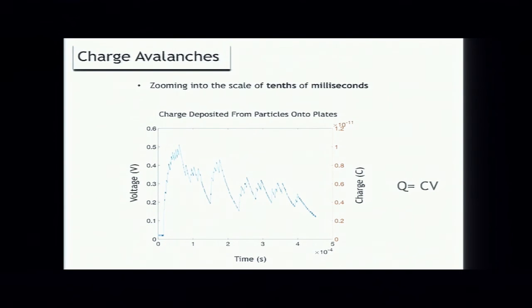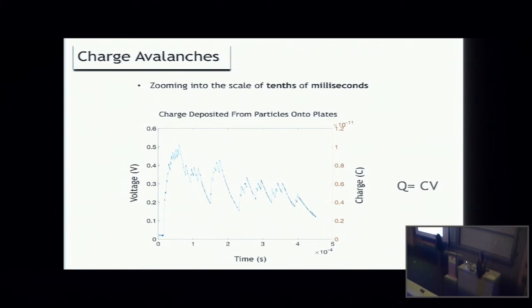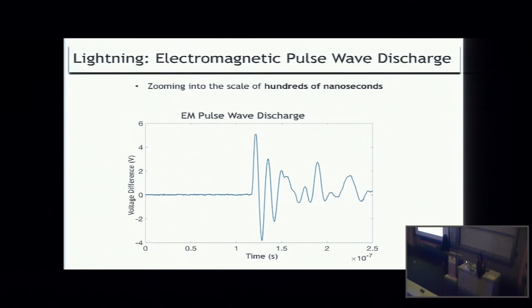This isn't to say that interesting things didn't happen with my setup. If we zoom into the scale of tenths of milliseconds, here's the voltage versus time graph. We get charge at the edges. On the right-hand side of the y-axis, I convert this voltage to a charge using Q equals CV. We think this is how the charges are depositing their charge onto the plates. Zooming in even more to the scale of hundreds of nanoseconds, what we're seeing here is the particles depositing charge rapidly and emitting radio frequency waves. This is interesting because Cassini has brought back data of powerful lightning storms in Saturn's rings.